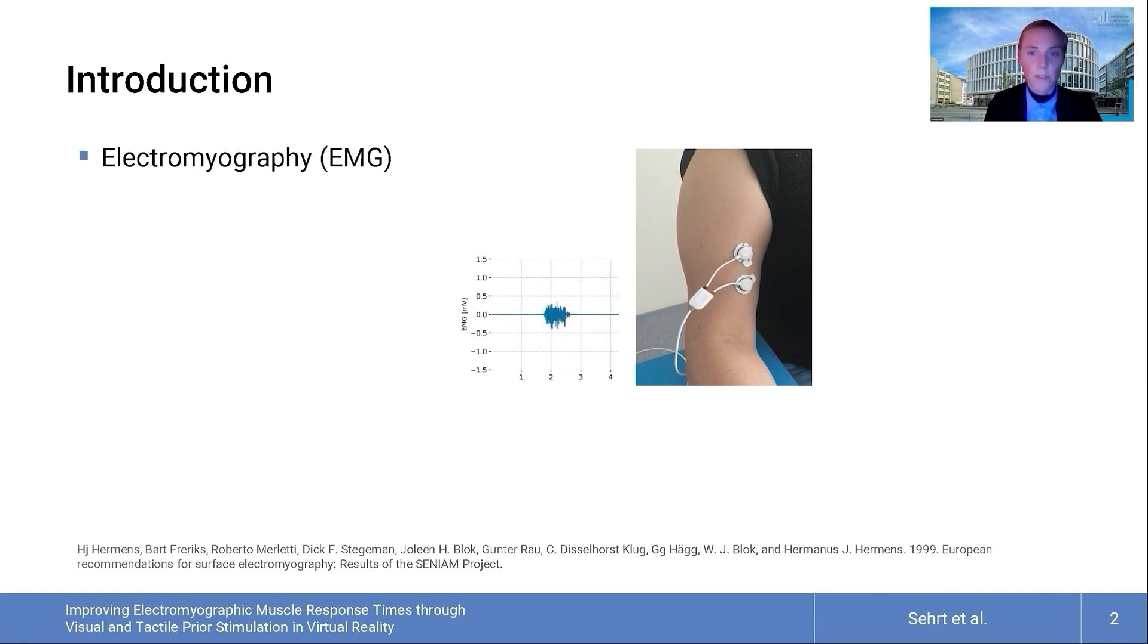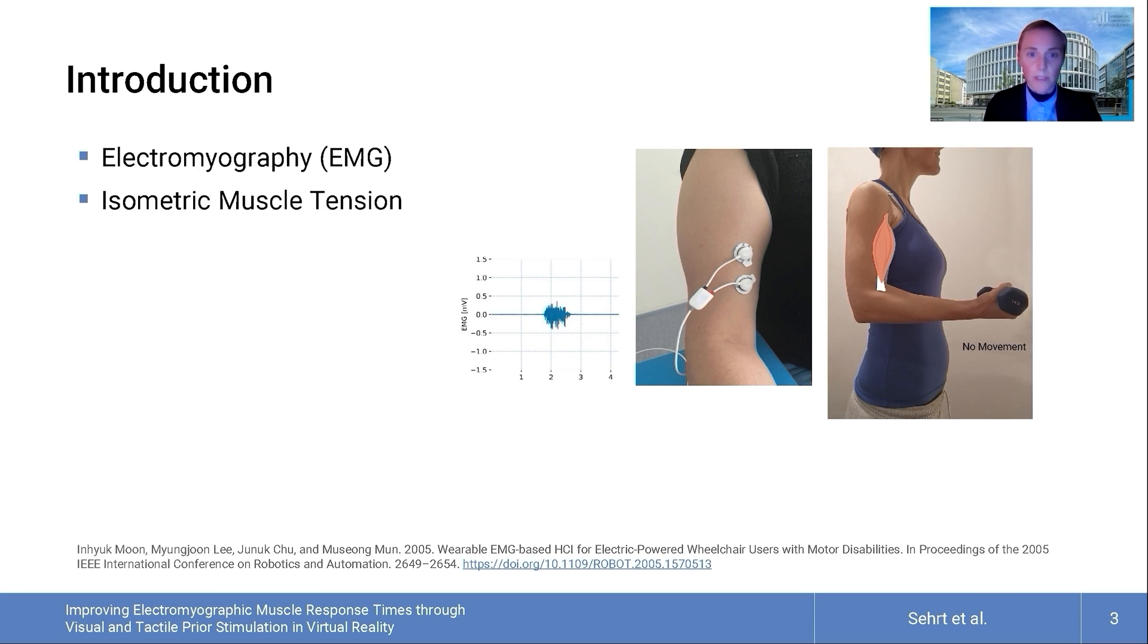Electromyography measures the electrical potential generated by skeletal muscles. It enables hands-free interactions by detecting muscle activity at different human body locations. Standardized protocols for EMG signal acquisition and electrode placement have been proposed by the European Recommendations for Surface Electromyography. Isometric muscle tension is a consciously activated muscle contraction without any movement, where the muscle is tensed without changing its length and therefore the involved limbs are not changing their position. Isometric EMG is preferred for avoiding unintended motion-based input in computer systems or when movement is infeasible.